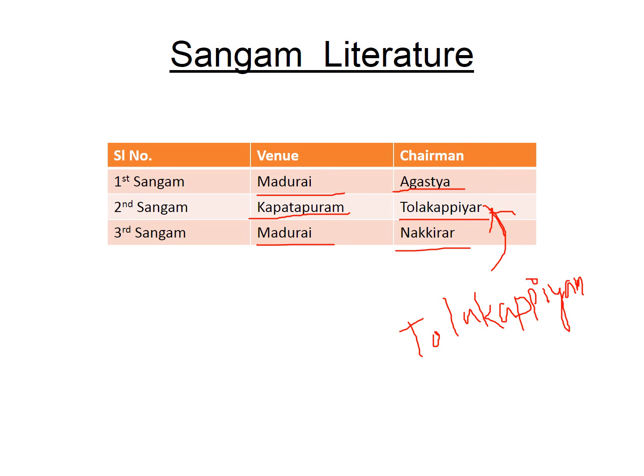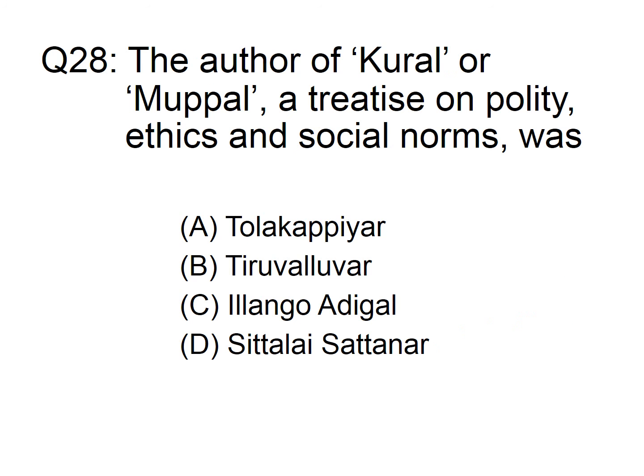Tolkappiyam is the first work on Tamil grammar. The author of Kural, also known as Muppal — a treatise on polity, ethics, and social norms — was option A: Tolkappiyar, B: Thiruvalluvar, C: Ilango Adhigal, D: Sittalai Sattanar. The answer is option B, Thiruvalluvar. This book was called the Bible of Tamil Land.